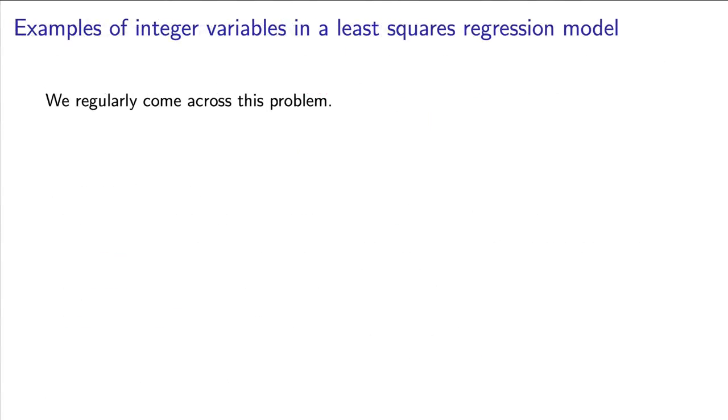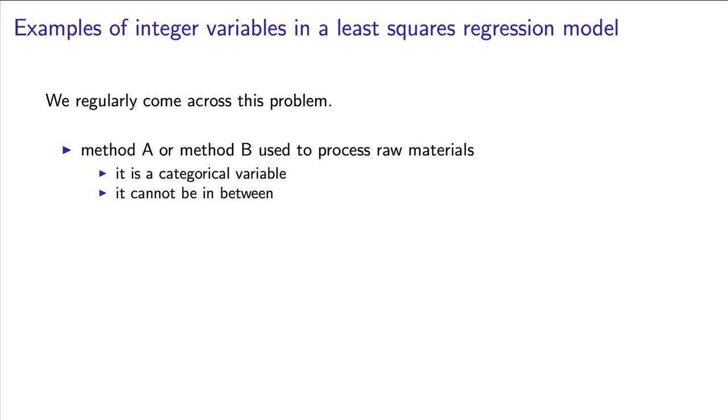We are getting near the end of our least squares module, and in this video we are looking at integer variables. These types of variables show up regularly in multiple linear regression models. For example, what if you wanted to indicate that you used method A or method B to process your raw materials? You can only use method A or B. There's nothing in between.